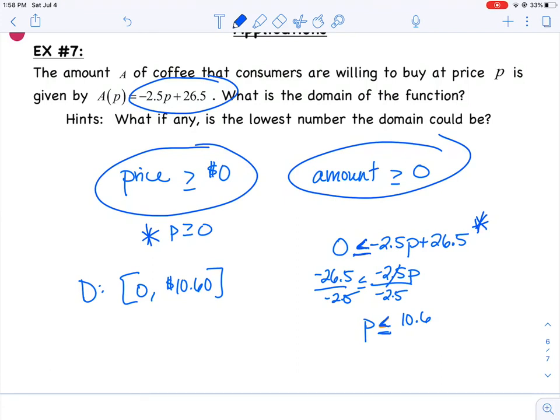anytime you divide by a negative, you've got to switch your inequality sign. So you end up getting P has to be less than or equal to 10.6.